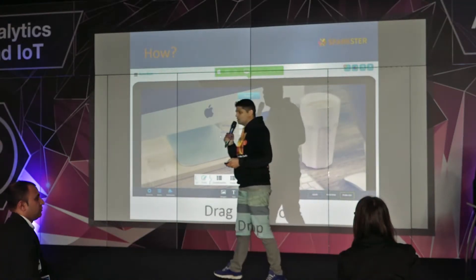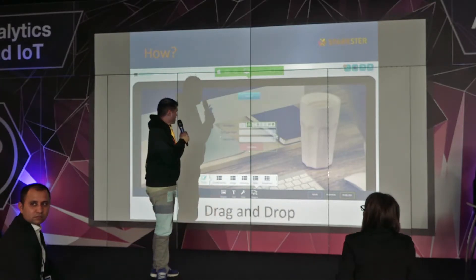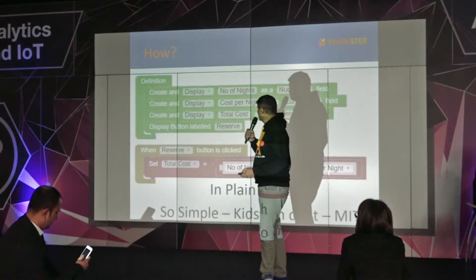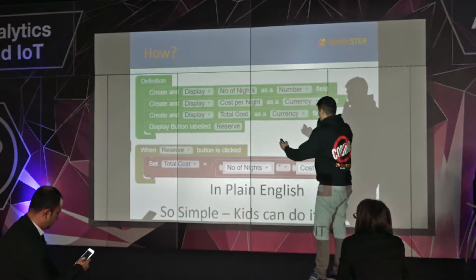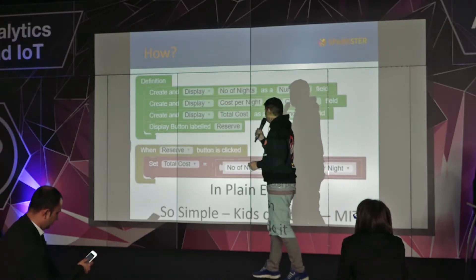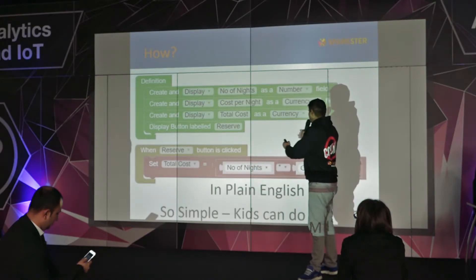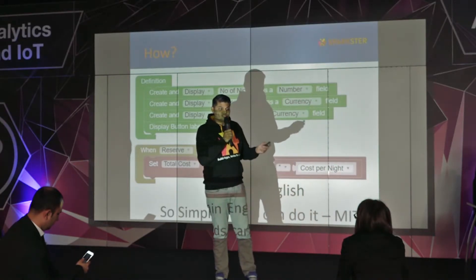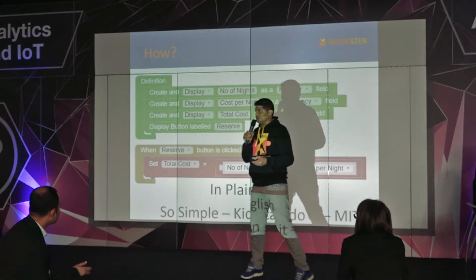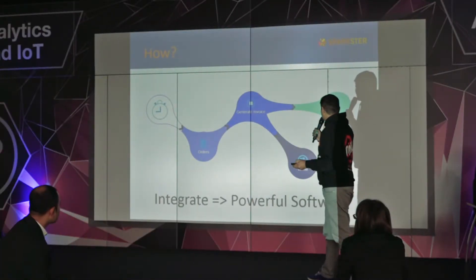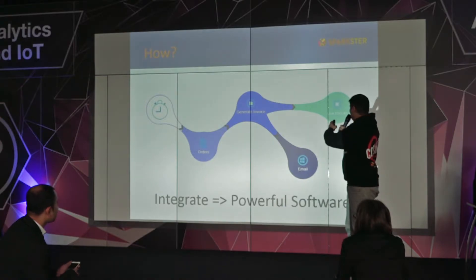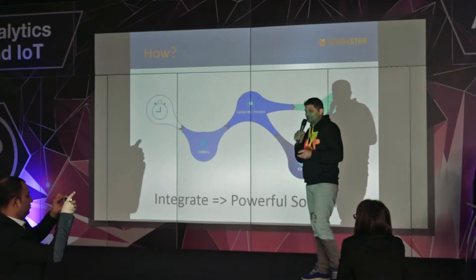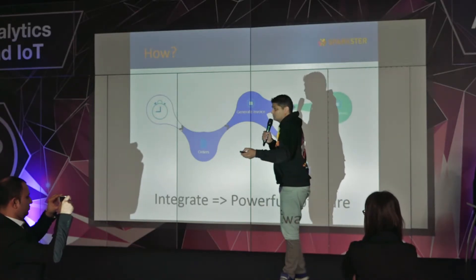And you can do it without learning anything about software development. You drag and drop controls on a page, you build pretty interfaces, and then here's the logic in plain English: 'Create and display number of nights as a number field. Set the total cost equal to the number of nights multiplied by the cost per night.' What you don't see is any of the plumbing that most software developers have to deal with. You can integrate whatever you've built with other things like APIs from QuickBooks or anything you can imagine — these APIs you can integrate yourselves to with NOCO.